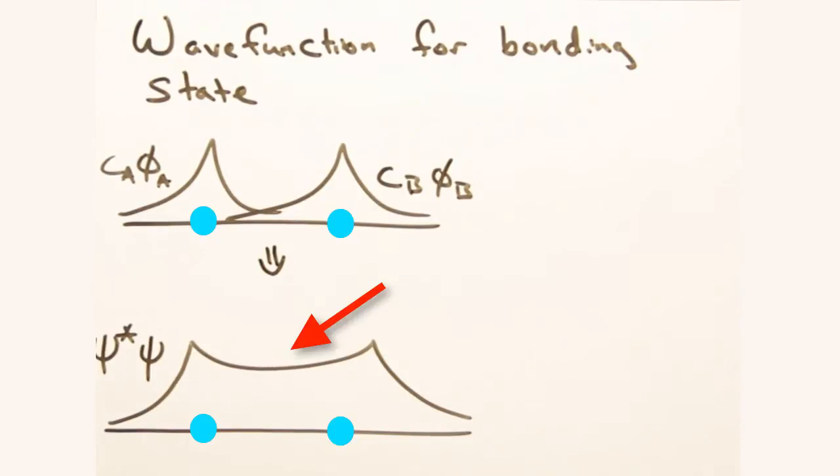Ah, now I see that there's a charge buildup in the electron density between the two atoms, indicating the probability of finding the electron is high in this region. Nicole, it's also important to note that since the charge pileup is in the space between the atoms, we call this a covalent bond. This is the quantum version of the sharing that you're familiar with from Gen Chem.